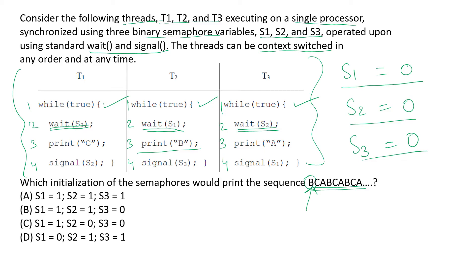In order to proceed, we need at least one semaphore to be set to one. Since 'B' is the first character we need to print, we set the value of semaphore S1 to one. Then T2 can wait on S1, print 'B', and raise a signal for S3, after which line two of process T1 can execute successfully.